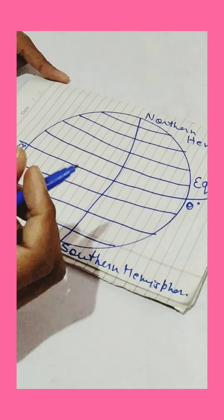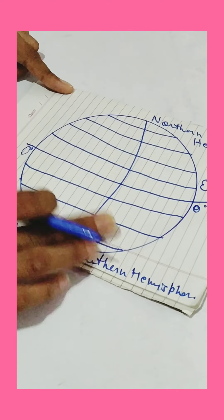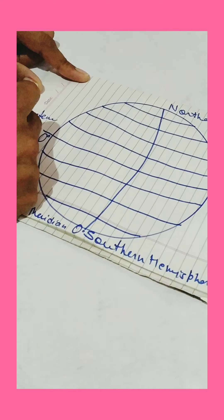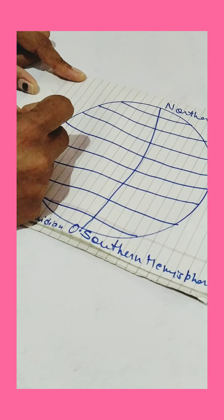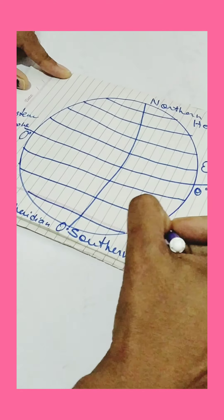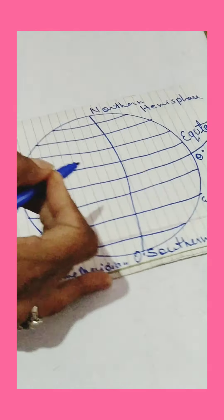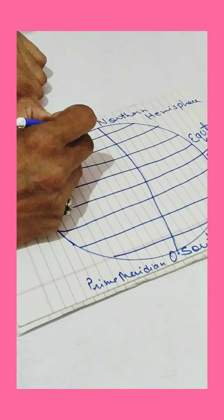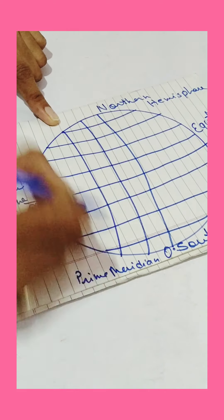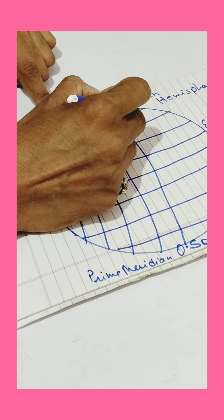And it also divides the earth into two parts: the western hemisphere and eastern hemisphere. And like the latitudinal lines, these are longitudinal lines. They are long, that's why these are called longitudinal.